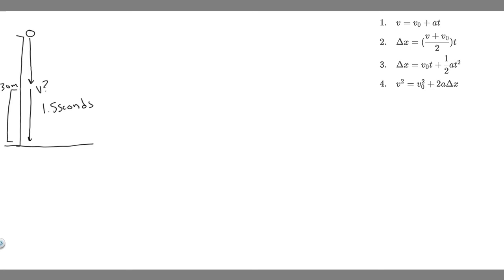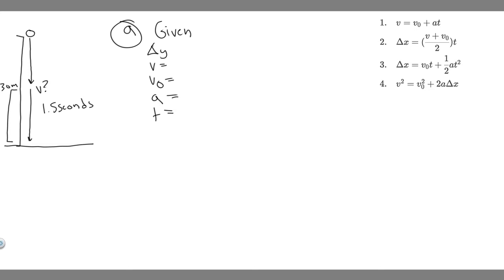Let's start with part A. The first thing you always want to do is write out the given variables. We have delta y, v, v-sub-0, a, and t. We want to pick an interval in which we know the variables. For part A, we're trying to find the velocity when the object is 30 meters above the ground — right at that 30-meter mark.